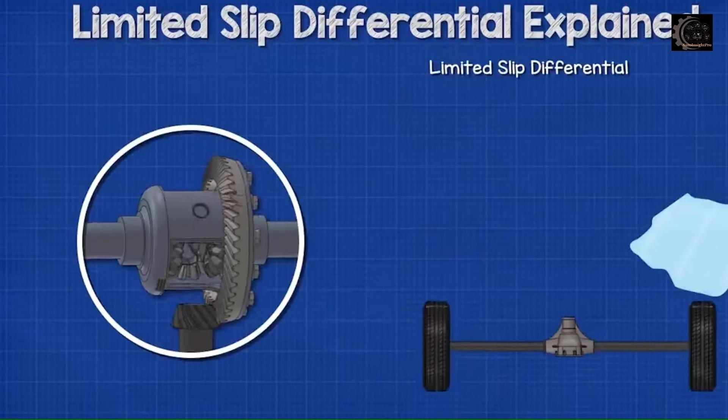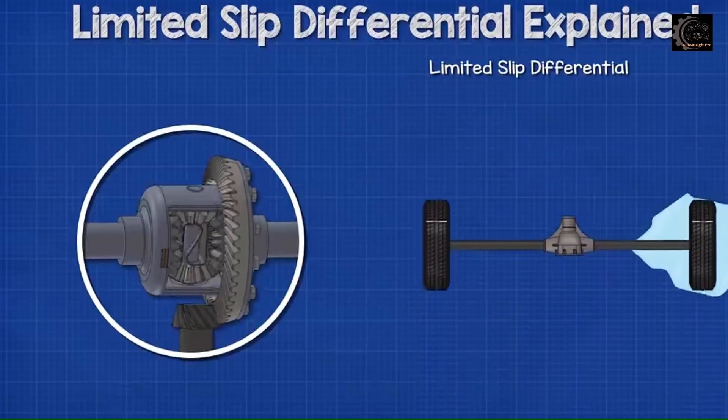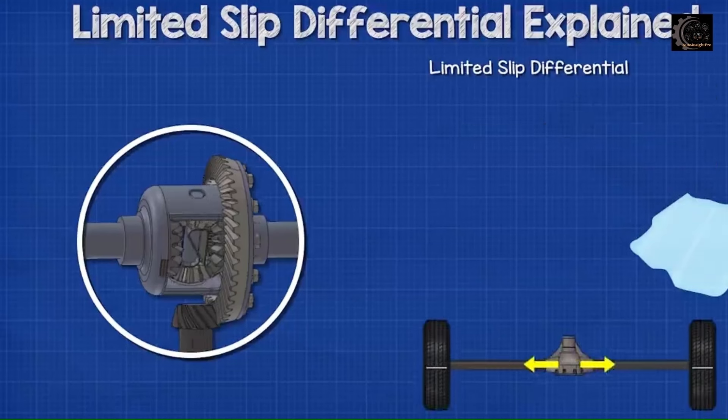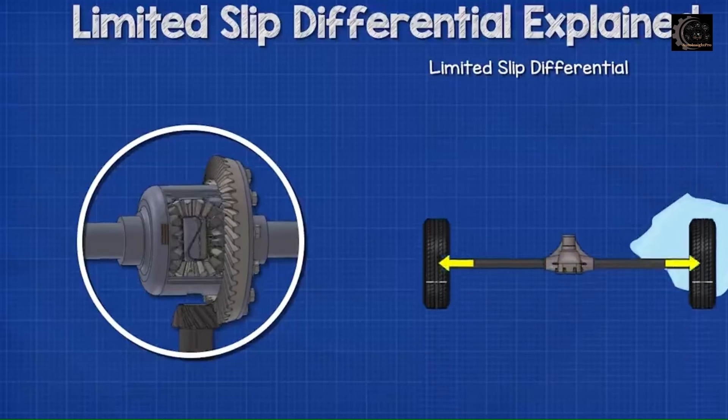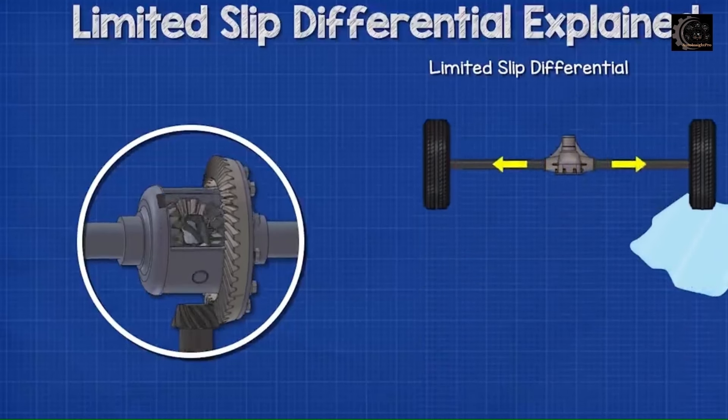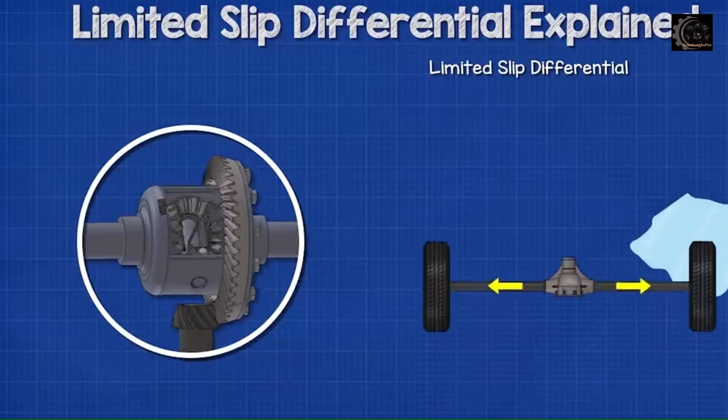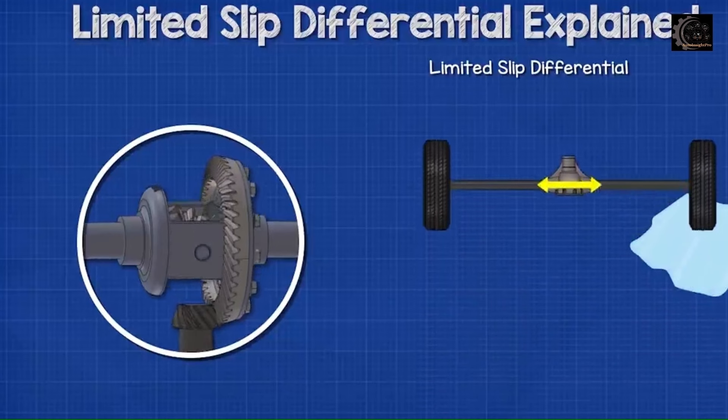So with the limited slip differential, when a car travels across a slippery surface, the power of the engine is distributed to both wheels, so the car gets some traction and is able to continue forwards. But this isn't possible with an open differential, and so the vehicle will become stuck.